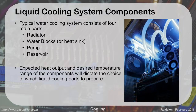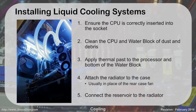Your expected heat output and desired temperature range will dictate what kind of cooling parts you buy. As you pick out your system, you're going to have to do some research to determine what cooling a given processor needs. To install: ensure the CPU is inserted in the socket, clean the CPU and water block of any dust and debris, apply thermal paste between the processor and water block just like with a heat sink, attach the radiator to the case — usually in place of where the rear fan was — and connect the reservoir to the radiator and connect all your piping together.